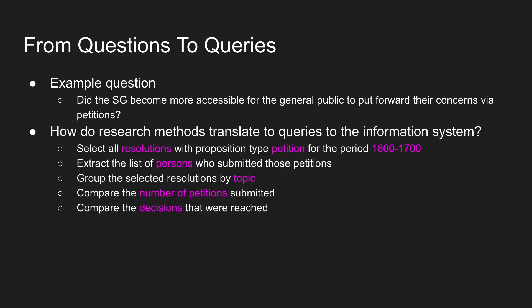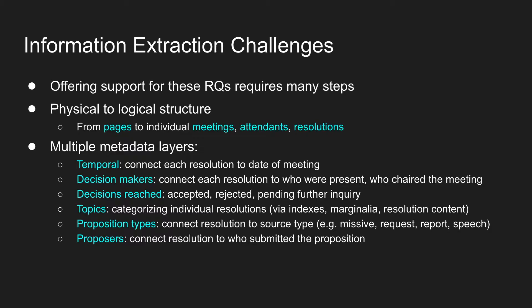With each question, we can think about how it would translate into queries a researcher would put to the information system. Taking the example of the accessibility of the States General and the petitions submitted: a researcher would want to select all the resolutions based on petitions for a particular time period — potentially thousands of resolutions. From them, the researcher may want to extract lists of persons who submitted petitions, lists of attendees, and the topics of those petitions, then look at numbers of petitions per year or decade and how decisions changed over time.